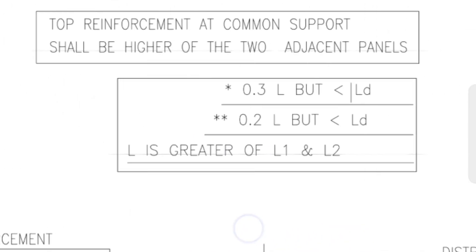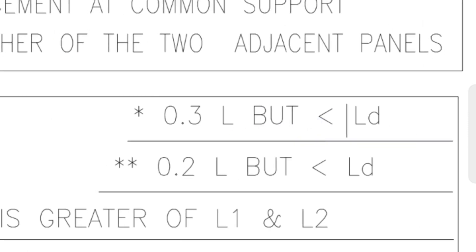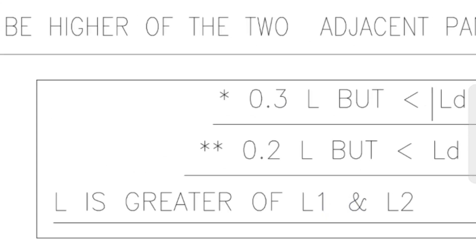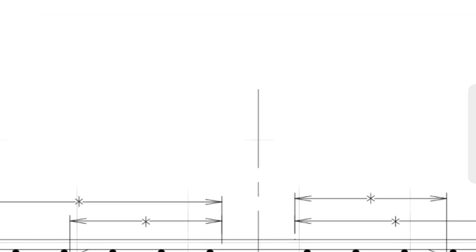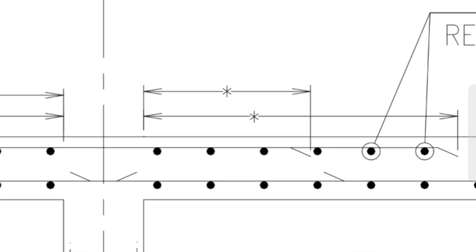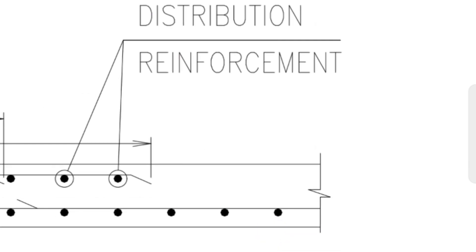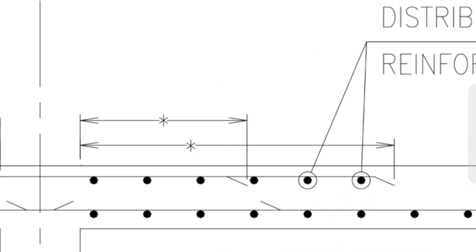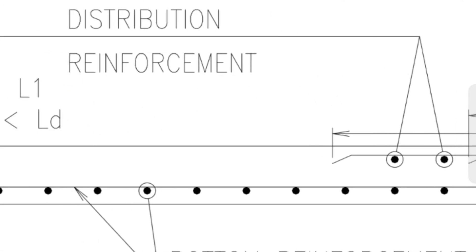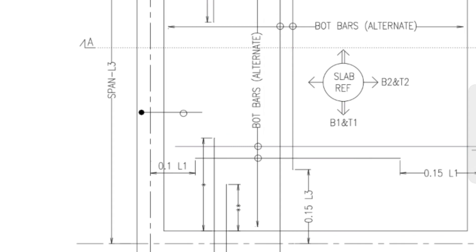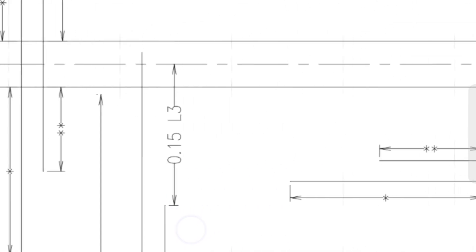One star indicates 0.3 into L and two stars indicates 0.2L. L is the greater of L1 and L2. This is the lap provided in the beam. This is the distribution reinforcement. This is the bottom reinforcement as shown on the floor plans. The top bar is staggered.